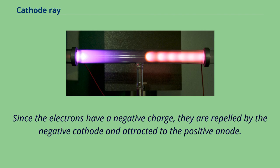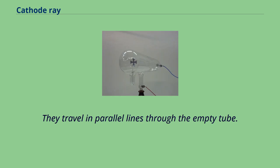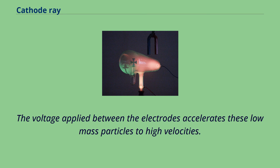Since the electrons have a negative charge, they are repelled by the negative cathode and attracted to the positive anode. They travel in parallel lines through the empty tube. The voltage applied between the electrodes accelerates these low-mass particles to high velocities.